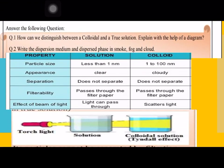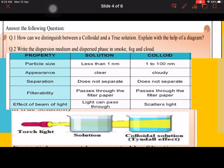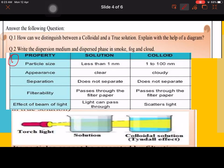First question: How can we distinguish between colloid and a true solution? You can write different points on the basis of which you can distinguish. Explain with the help of a diagram. Write the dispersion medium and dispersed phase in smoke, fog and cloud.